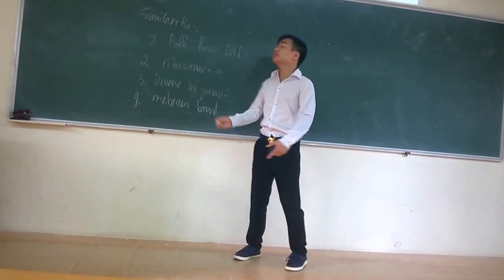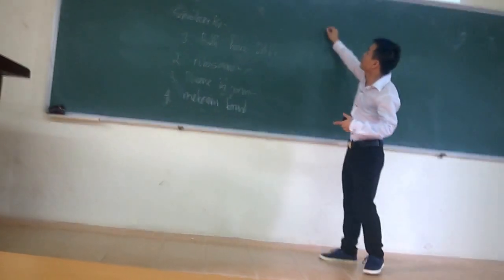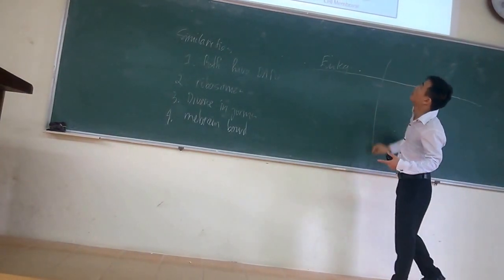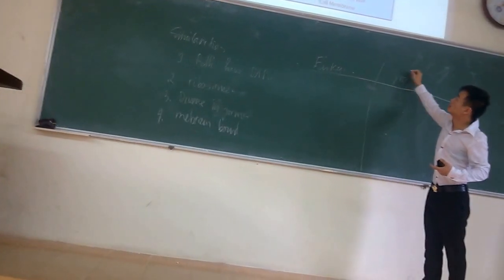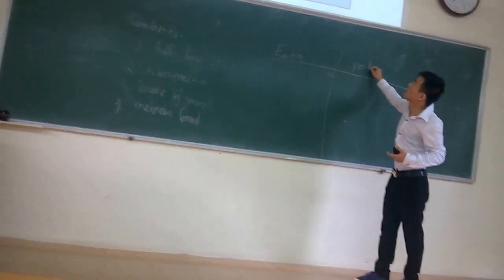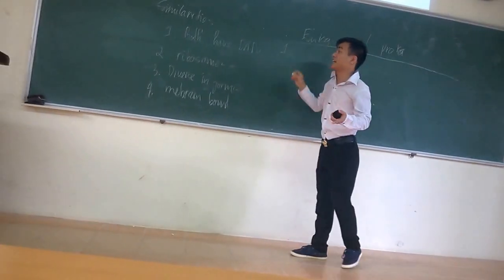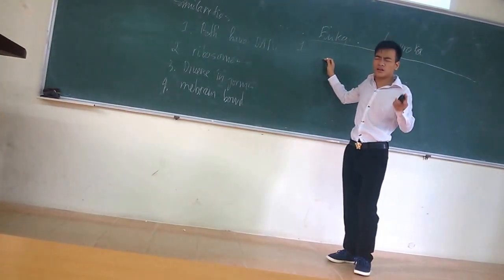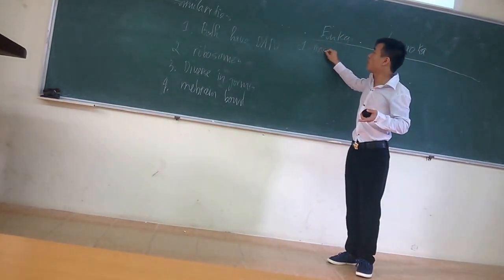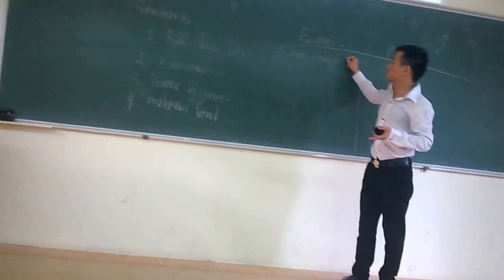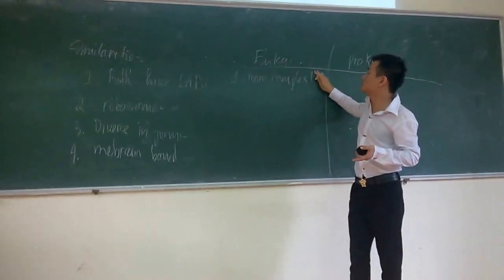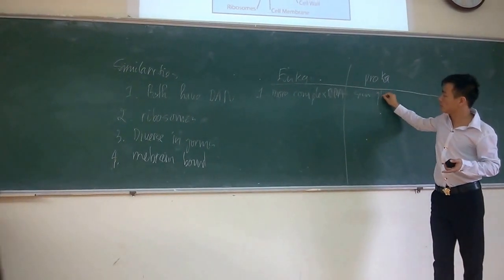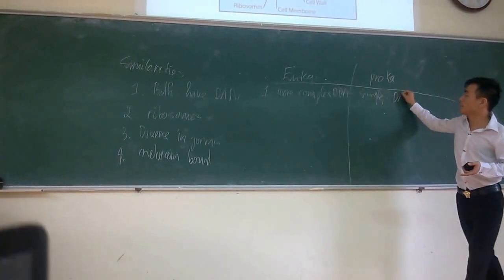What is the difference? The difference between the eukaryotic and prokaryotic. The first one, also about the DNA. The eukaryotic has a lot of much more complex DNA. This one, the prokaryotic, it just has very simple DNA.